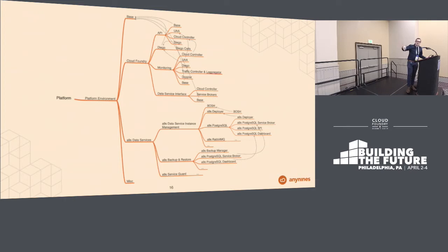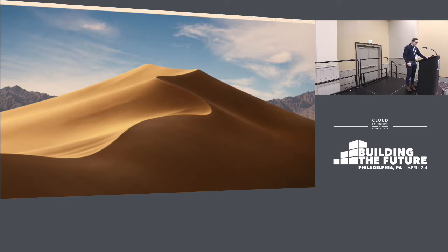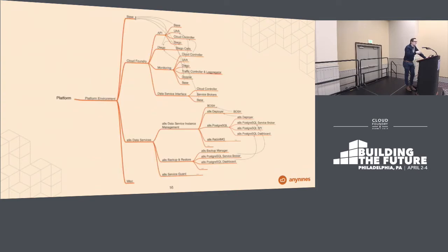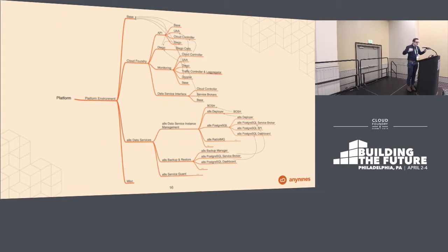This is, for example, how one of our Any9s platform environments looks. You see there's a platform that comprises several platform environments, and each platform environment is comprised of several subsystems. In this case: a base system where shared components are, the Cloud Foundry subsystem, the Cloud Foundry runtime, and our data services — which comprise eight different data services, their service brokers, their APIs, and several other components. We're looking at an environment with more than 100 components, organized in a set of subsystems. The Cloud Foundry environment splits into the API, the Diego subsystem, the monitoring subsystem, and the service broker subsystem.